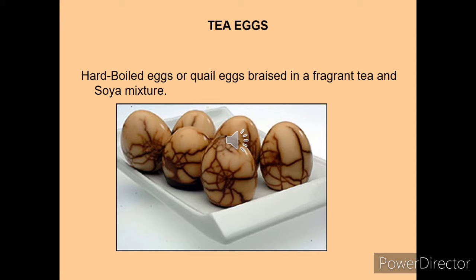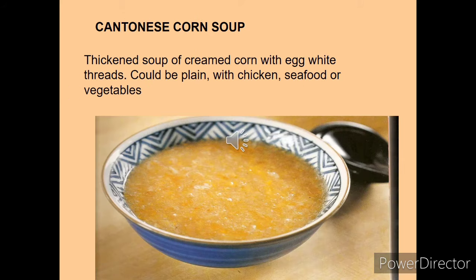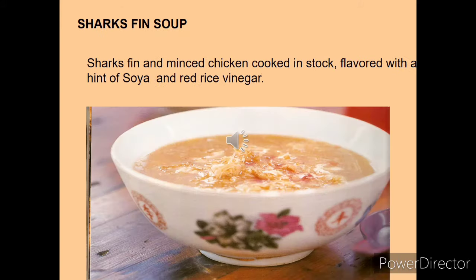Tea eggs are hard-boiled eggs braised in a tea and soy mixture, which gives them their distinctive color. Pickled cucumber or cabbage: salt, ginger and red chili are applied to the cabbage, then stir-fried in a wok with different vinegar and sauces. Cantonese corn soup is a thick soup made from corn, and egg white threads are used for garnishing. Different versions are available — plain or made with chicken.